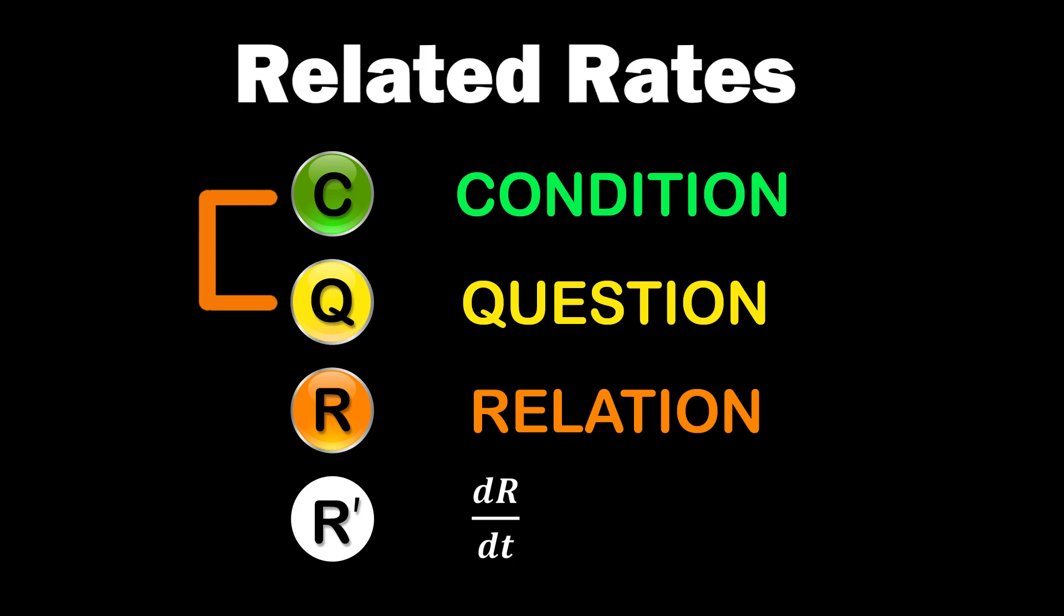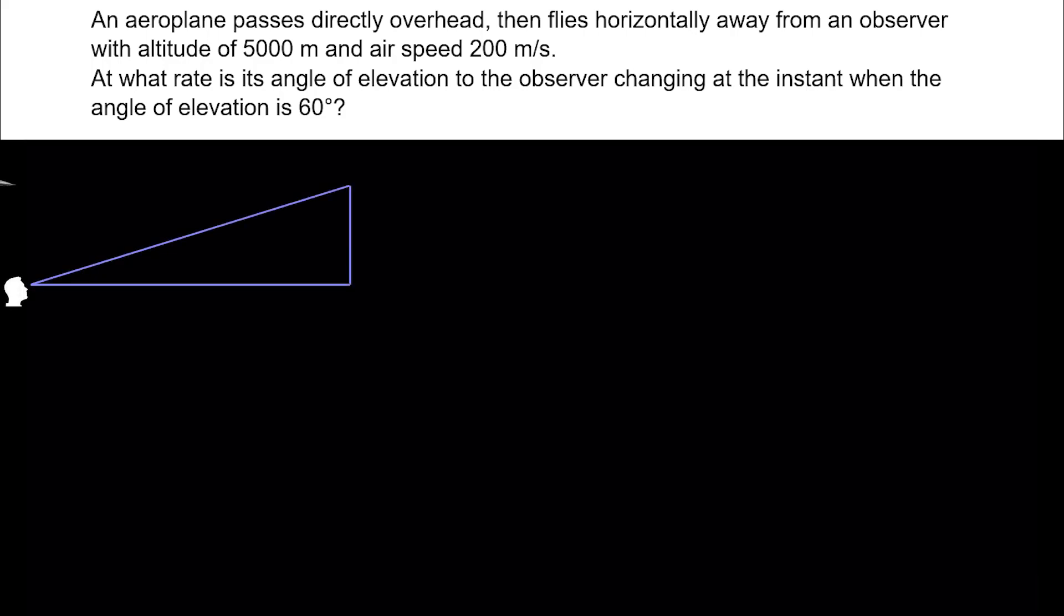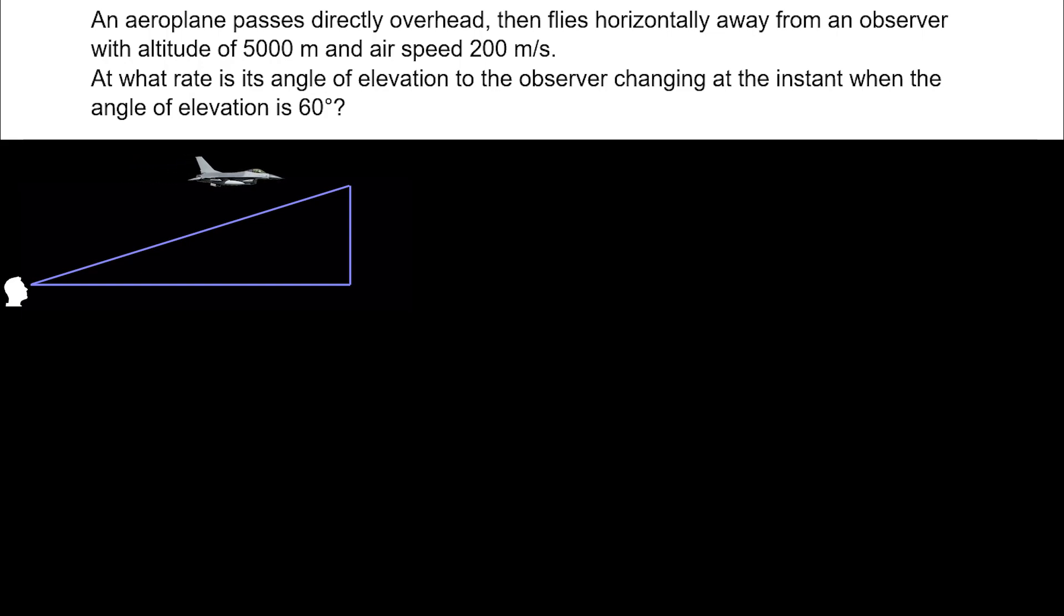Now, let's apply this to solve a common related rates problem: an airplane problem. Imagine there is an airplane that passes directly overhead, then flies horizontally away from an observer with an altitude of 5000 meters and air speed 200 meters per second. At what rate is its angle of elevation to the observer changing at the instant when the angle of elevation is 60 degrees?